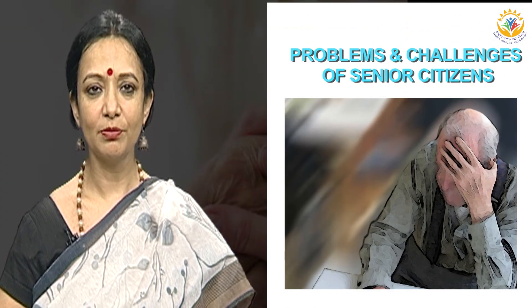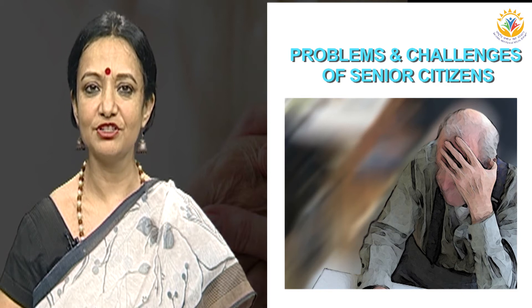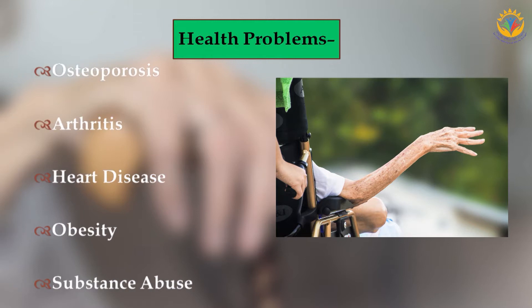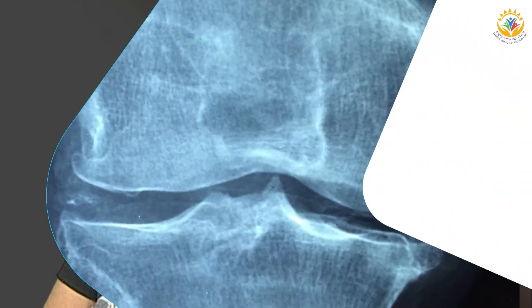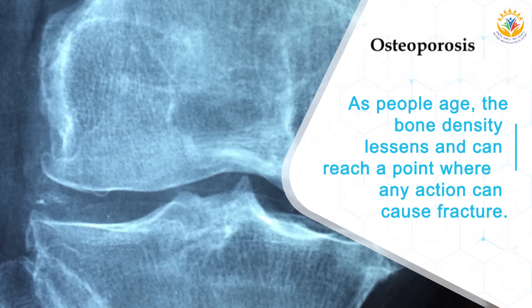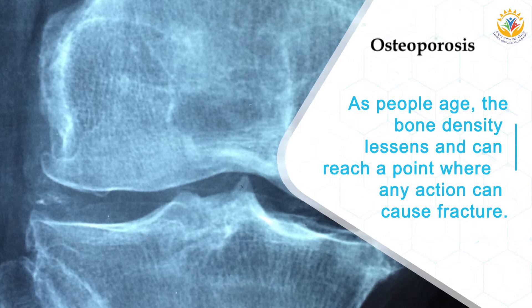Let us talk about the problems and challenges of senior citizens. First, we will discuss health problems. Deterioration of health and strength is the main characteristic of old age. As people age, bone density lessens and can sometimes reach a point where an action as simple as standing up or sitting down can cause a fracture — this is osteoporosis, which usually happens with the very old, those in their late 80s or 90s.